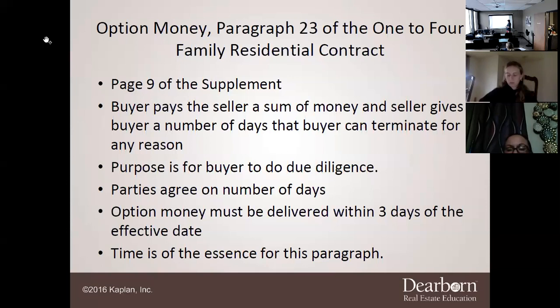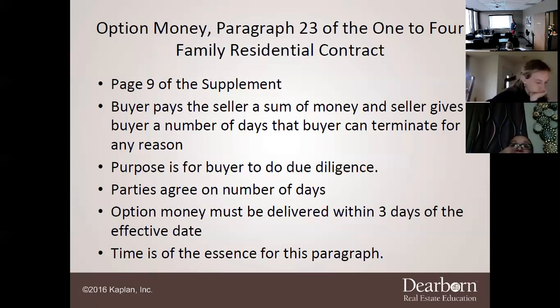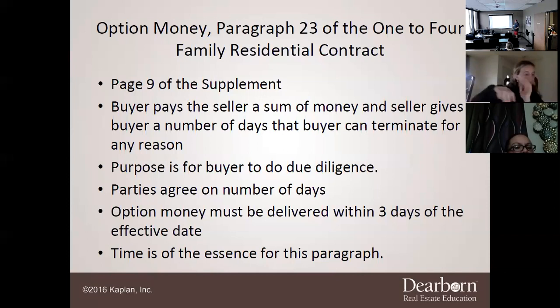The purpose of the option period is for the buyer to do due diligence — inspections, surveys, everything — to make sure the house is what they want. The reason earnest money can be given back to the buyer if they back out within the option period is that even if you have serious intent to buy a $300,000 house, if an inspection finds the foundation is falling apart, it's not your fault you're backing out. That's why earnest money would be given back to the buyer in that situation.